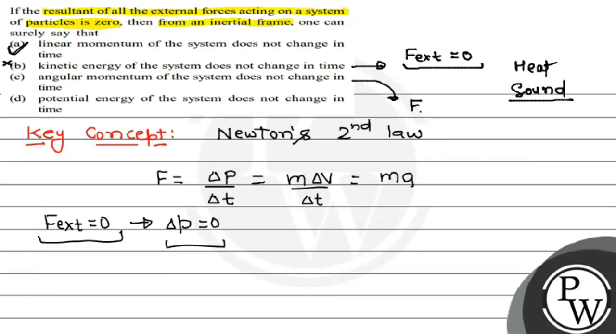For option C, if the torque is zero, then the angular momentum will be conserved. But external force being zero doesn't necessarily mean torque is zero. So, this is not the correct option.